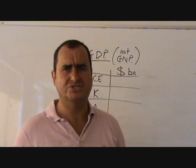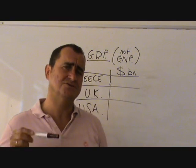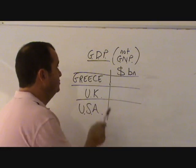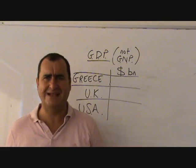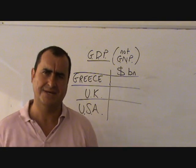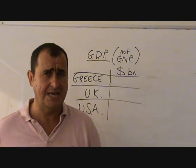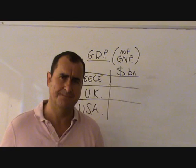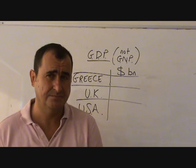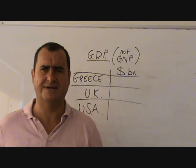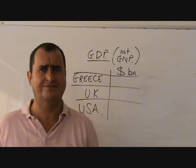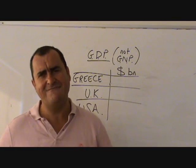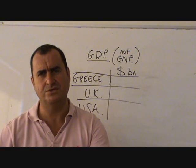GDP, Gross Domestic Product. We usually use GDP figures. GDP is literally the value of everything made in a country. If I'm talking about the UK, it's the value of all output from the UK economy. That might include foreign companies — Nissan have a very large factory in the north of England producing a lot of output, and that's counted in the UK GDP. Everything produced within the borders of the UK.